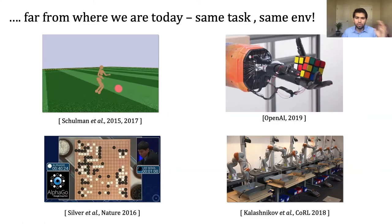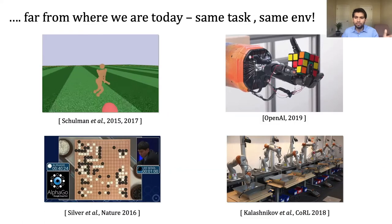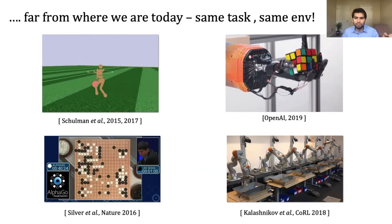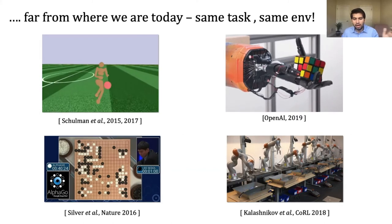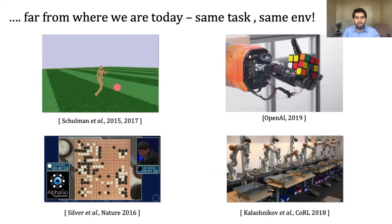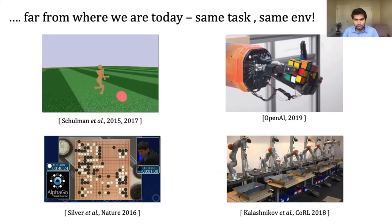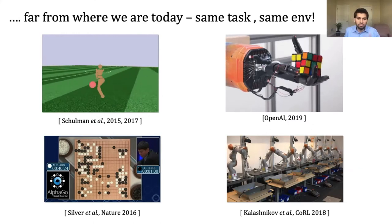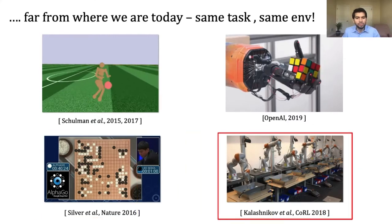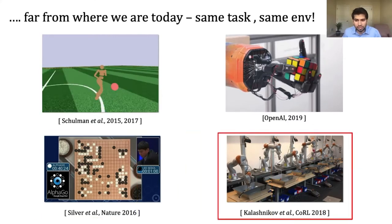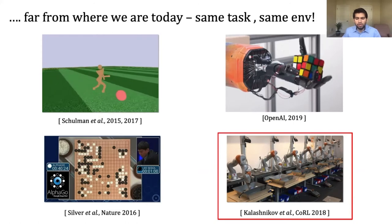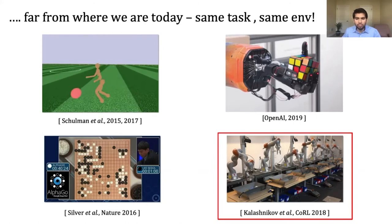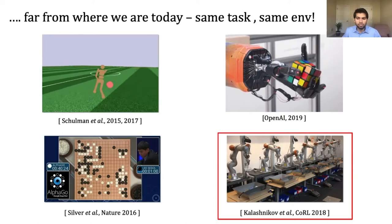This goal is unfortunately very far from where things are today. Most successful results in the literature focus on solving one task in one environment, and it is difficult to generalize from one scenario to another. This generalization problem is not just an issue in robot learning, but has been pervasive in all forms of learning.